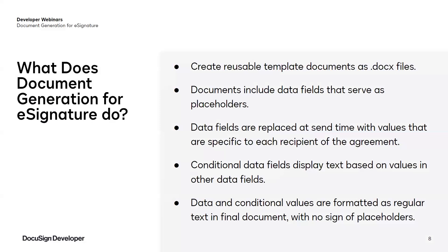The document generation feature enables you to create reusable template documents. Template documents must be docx files, which is the only file format currently supported. Within these template documents are placeholders called data fields. At envelope generation time, each data field is populated with a value that's specific to the recipient of that envelope. In the case of an employment offer, for example, data fields can be used for things like job title, salary, and start date. Document generation also supports conditional data fields that allow text to be displayed or hidden based on other values in the document — for example, a bonus percentage can be displayed based on the job title.